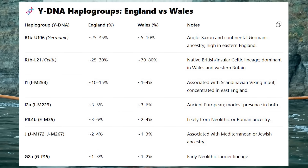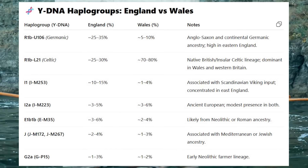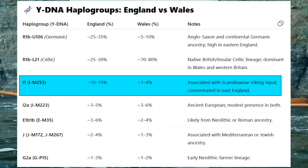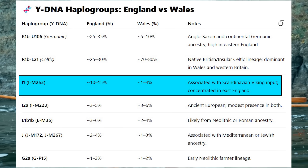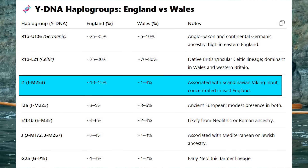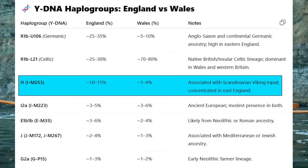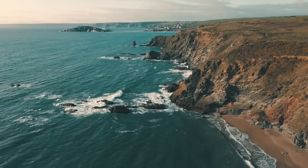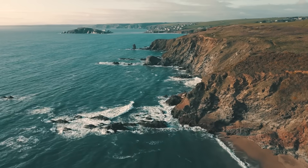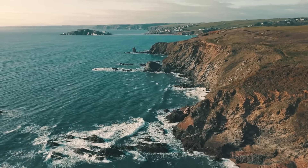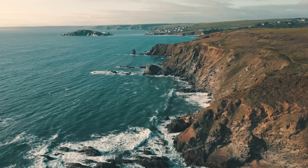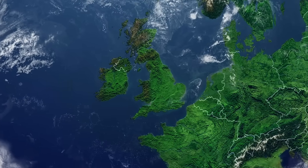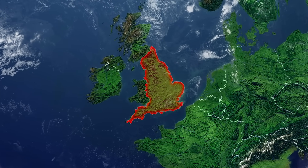We also see the impact of the Vikings and to some extent the Anglo-Saxons when we look at levels of I1, which is between 10–15% in England compared to just 1–4% in Wales. This was a key marker of the Vikings. England still has decent levels of R1b-L21, reflecting the Bell Beakers and the Celtic Britons, but the Anglo-Saxons and the Vikings made a notable impact on English DNA — a pattern that is much less pronounced in Wales.